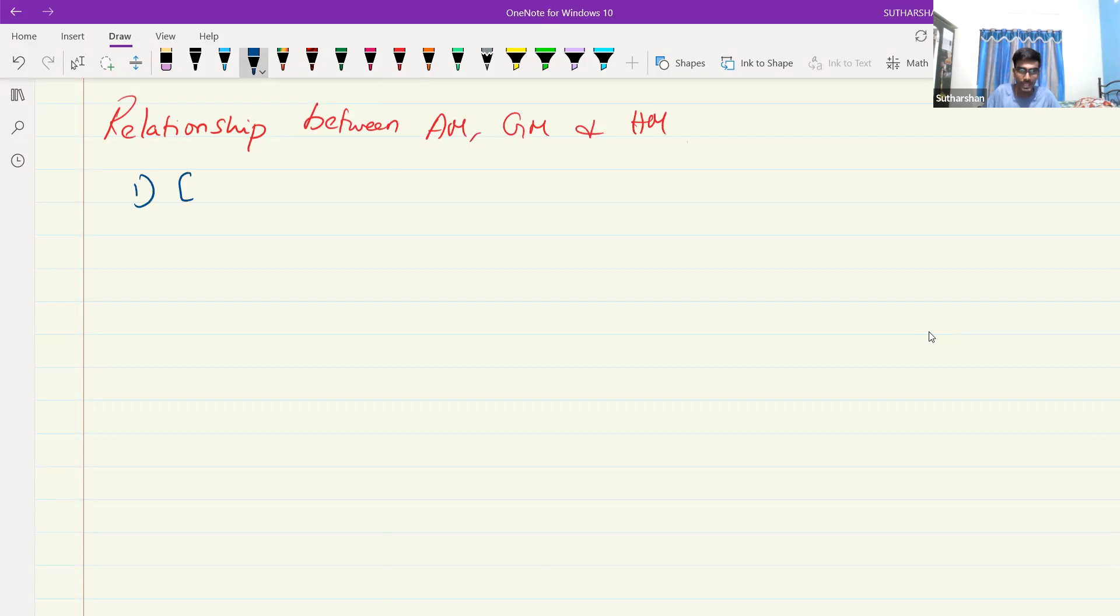Suppose the values are equal values, equal values, equal numbers, it is simpler. AM is equal to GM is equal to HM. Both values are equal, all the arithmetic means will be equal.